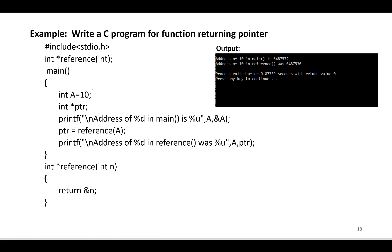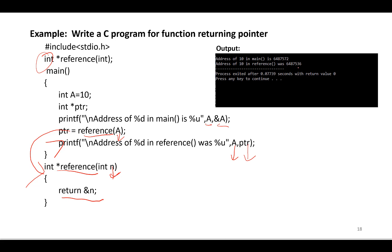Inside the main function, a is an integer variable and p is a pointer. When the function is called, control transfers to its definition. The function return type is int — `int *reference` indicates a function returning a pointer. The formal argument n receives the value 10, and then `return &n` returns the address of n back to the main function. The value of a is 10 and the address of a is 6487536.